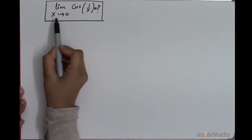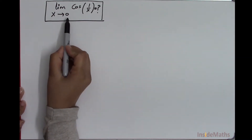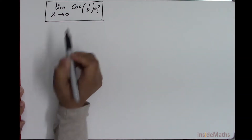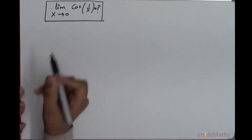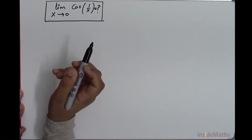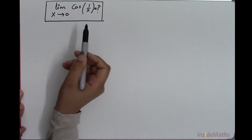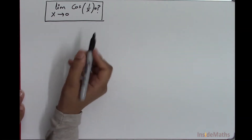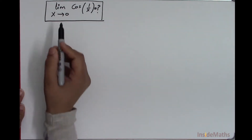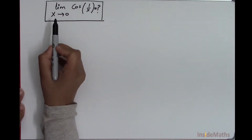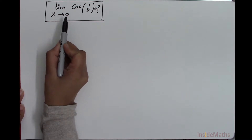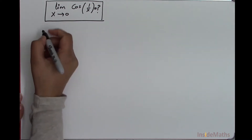In this video, I will find the limit as x approaches 0 of cos of 1 by x. I will do it numerically, that is by estimating the values of the function. For that, I will take some values of x which are going closer to 0.